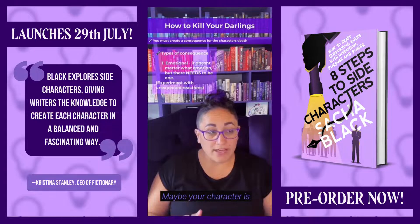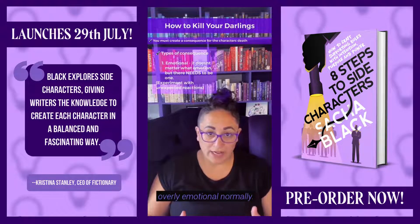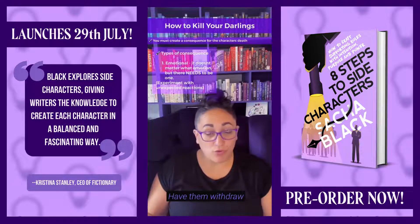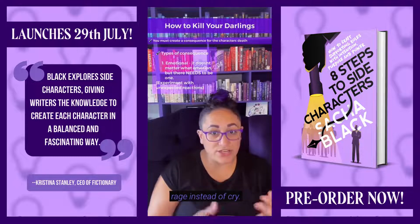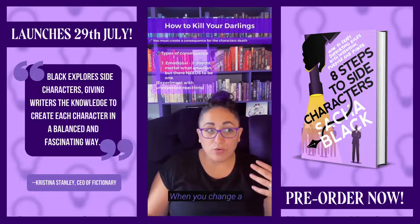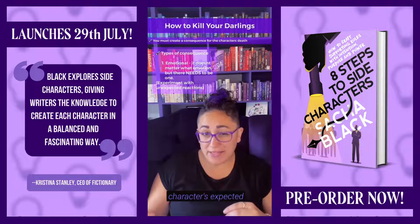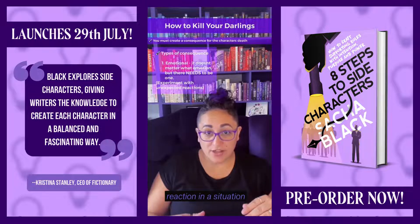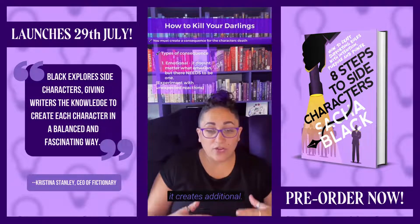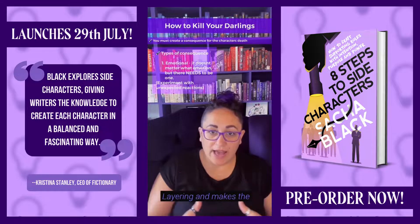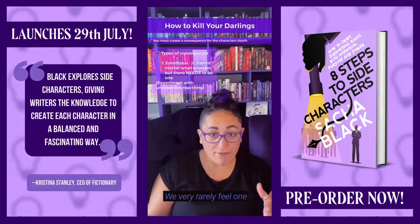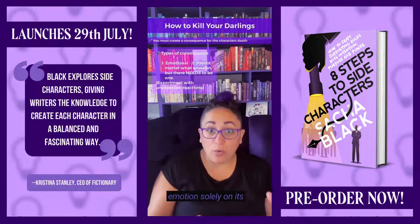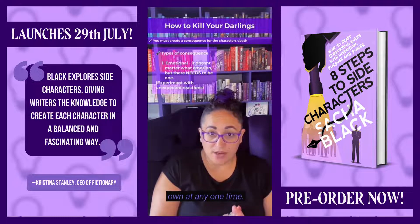One thing that is really good at creating multi-layered characterisation is having an unexpected reaction. Maybe your character is overly emotional normally — have them withdraw into themselves, or perhaps have them rage instead of cry. When you change a character's expected reaction in a situation that is overly emotional, it creates additional layering and makes the character more complex. That's because humans are complex — we very rarely feel one emotion solely on its own at any one time.